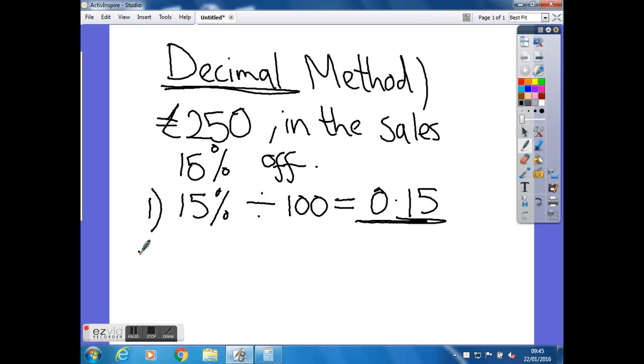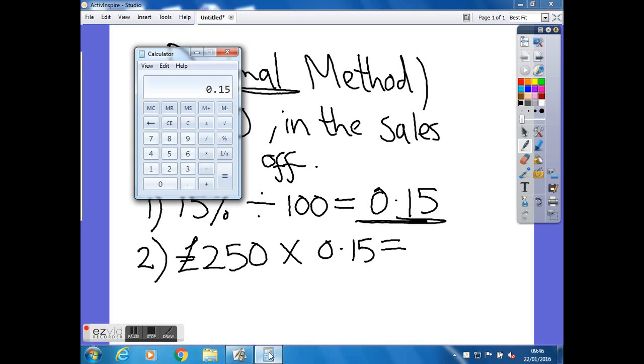We've changed it into a decimal. The second step is actually to take our original value, so the £250, and we need to times that by the decimal that we've just found, so times it by 0.15. The reason for that is if we times anything by a number that's less than 1, we'll be finding a smaller value of it, and that's what we're needing when we're looking at 15%. So again we can go back to our calculator to work that out.